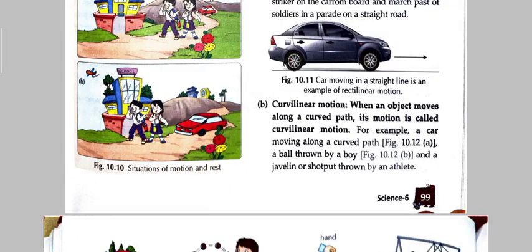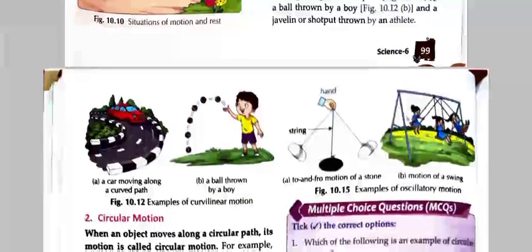Next is curvilinear motion. When an object moves along a curved path, its motion is called curvilinear motion. For example, a car moves along a curved path, a ball thrown by a boy, and a javelin or shot put thrown by an athlete. This is the curvilinear motion example.